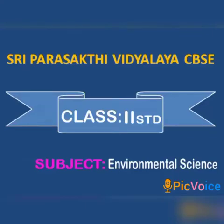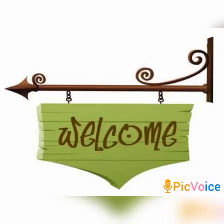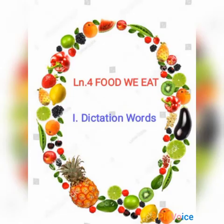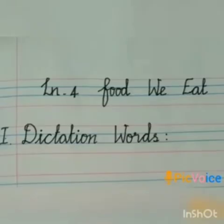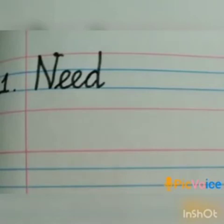Shri Parashakti with Yala CBS e-class 2nd subject Environment Science. Hello children, welcome back to our EBS class. Today we will write dictation words in chapter number 4, Food We Eat. In the first line, we will write the chapter number and the name: Lesson 4, Food We Eat. Roman numeral 1, Dictation Words. Listen carefully.